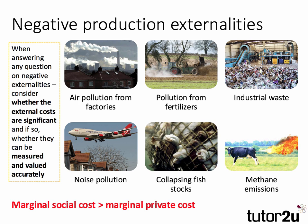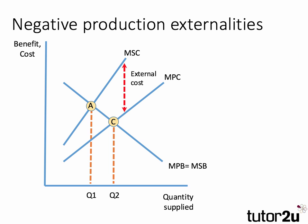With negative externalities from production, the marginal social cost is greater than the marginal private cost, and we can see that in this diagram. We have a product with negative production externalities and you see the growing divergence between social and private cost — that vertical distance is the external cost. Left to themselves, agents only consider their own costs and benefits, giving equilibrium between marginal private cost and marginal private benefit at output C.